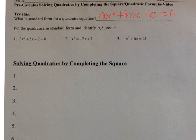It says put the quadratics in standard form and identify a, b, and c. Look at number 1: 3x squared plus 5x minus 2 equals 0. That is already in standard form. So a is equal to 3, b is equal to 5, and c is equal to negative 2.